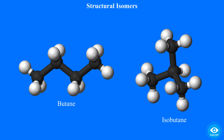One method for describing a chemical compound is to list the numbers of each kind of atom that's connected to another by covalent bonds. Take, for example, butane and isobutane. Each molecule has four carbons and ten hydrogens, but clearly they're